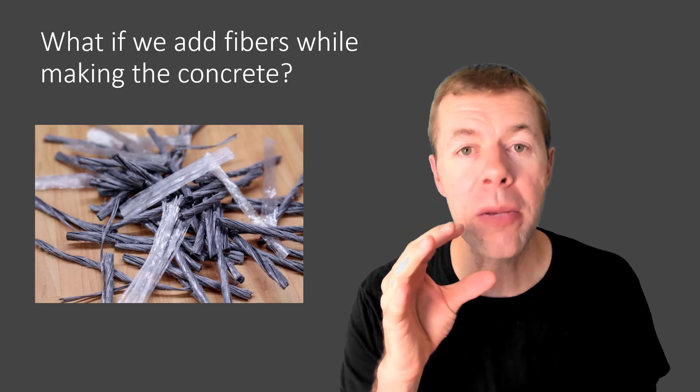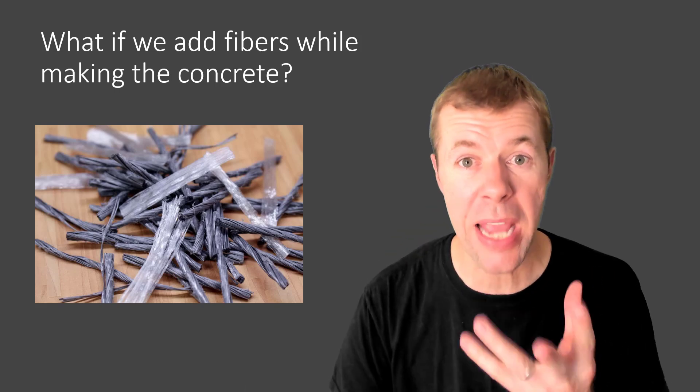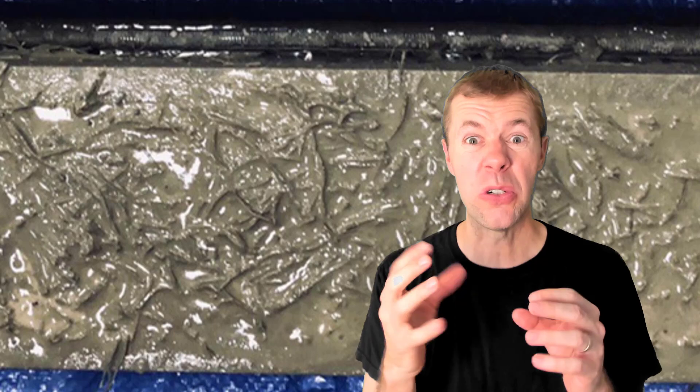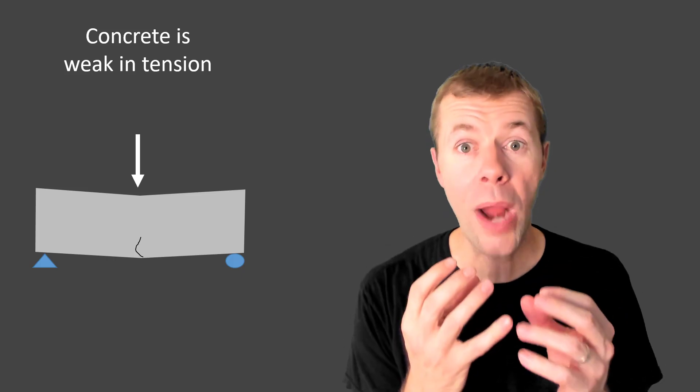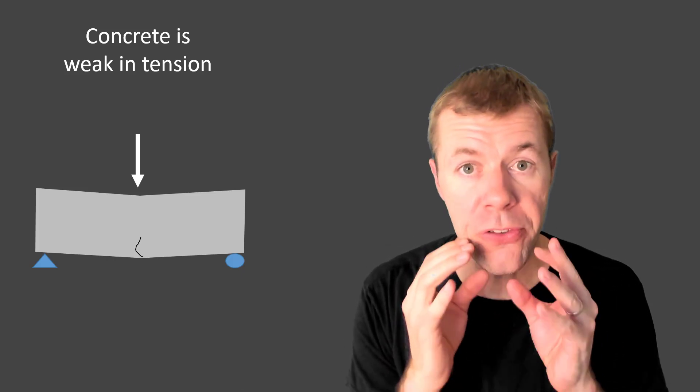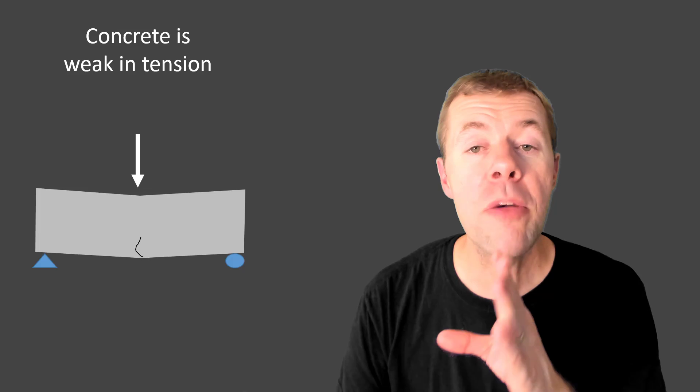What if we added fibers to the concrete while we were making it? Fibers get inside, they're like micro reinforcement all over the place. Now this crack will still form at the same load, but the beam won't fall apart. It will be held together by these fibers, and that is the benefit of fiber reinforced concrete. It doesn't make the concrete stronger but it makes it hold together longer. Let me show you what I'm talking about.